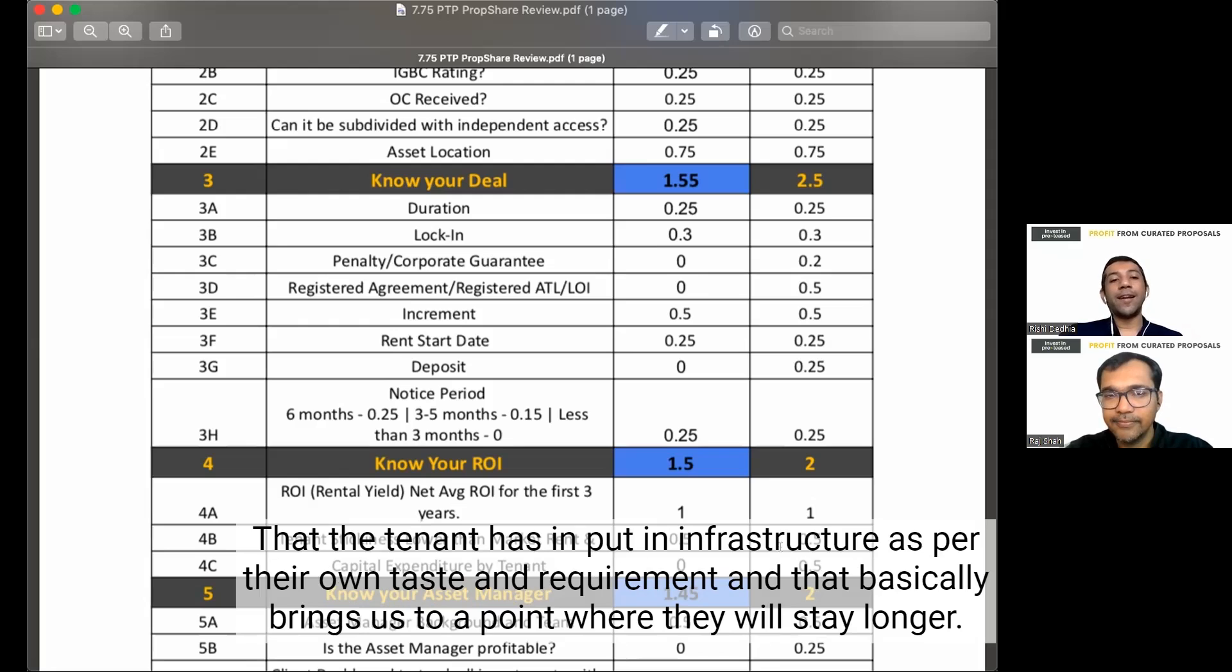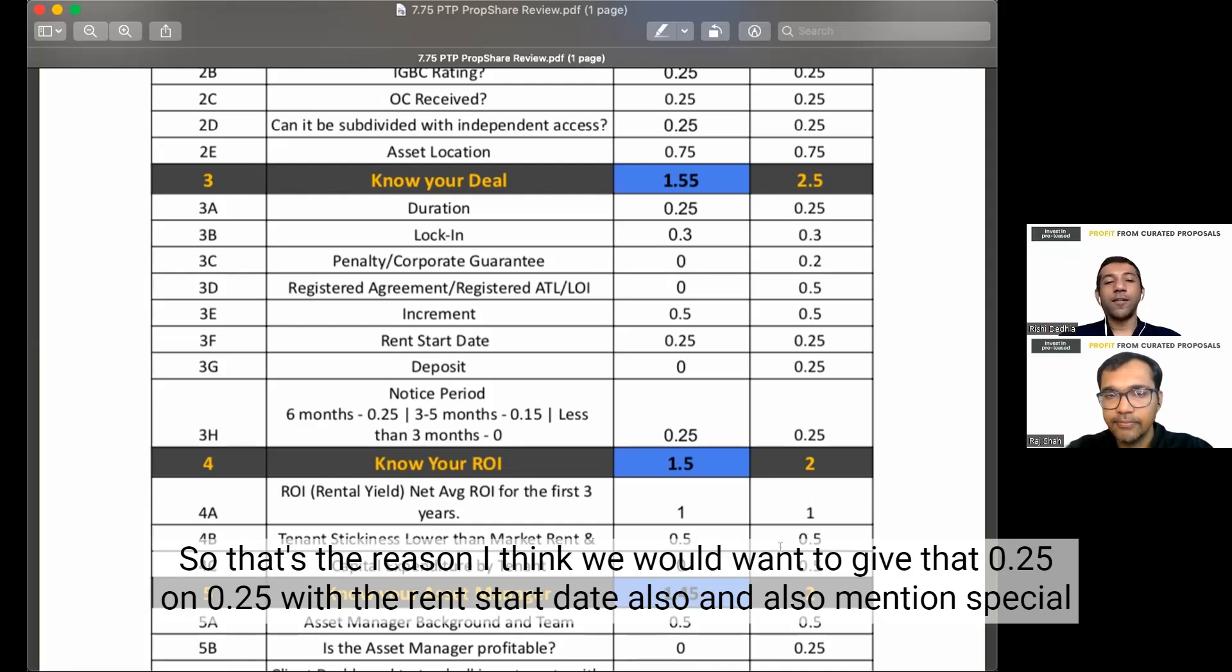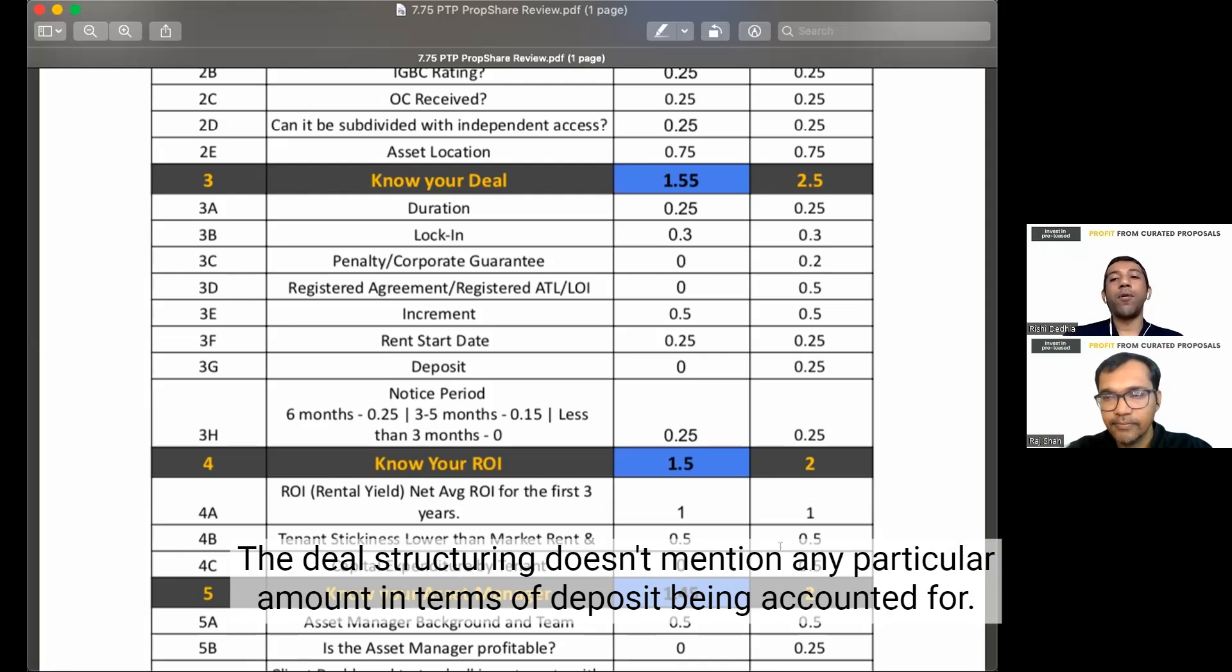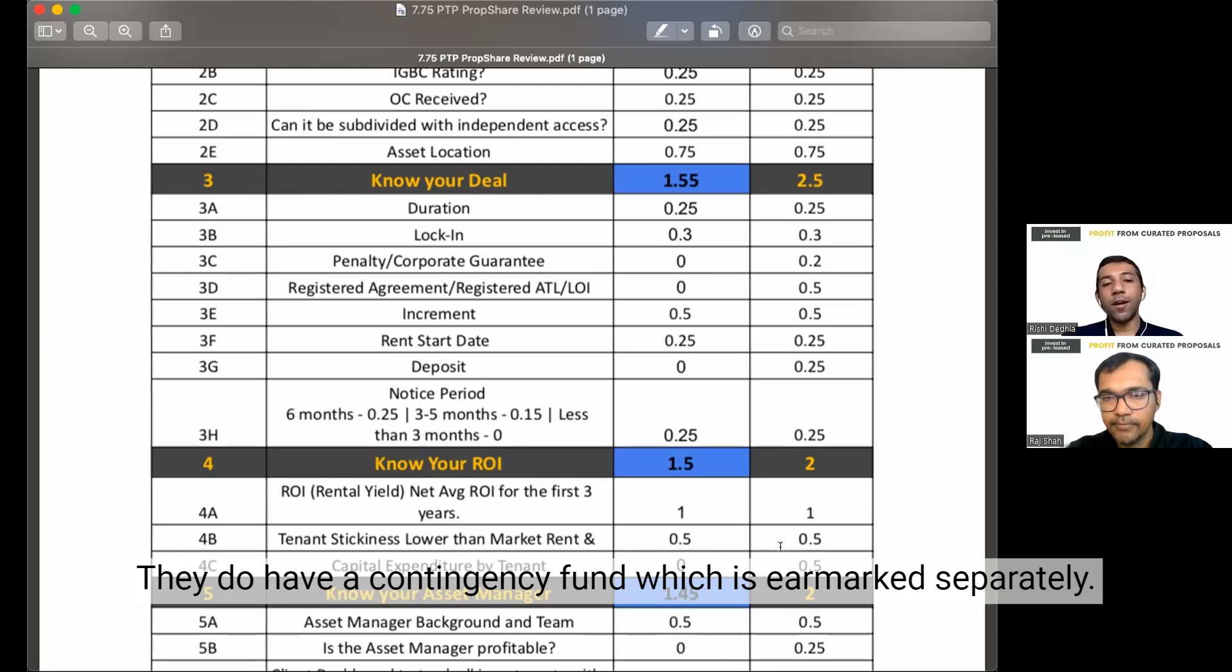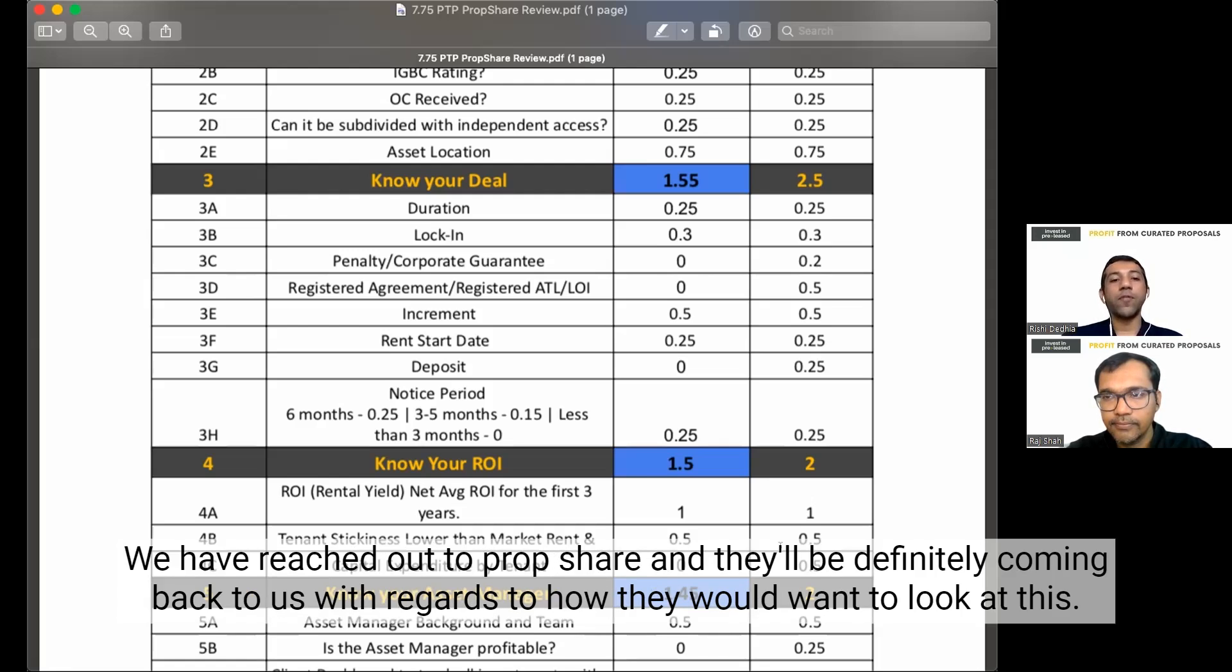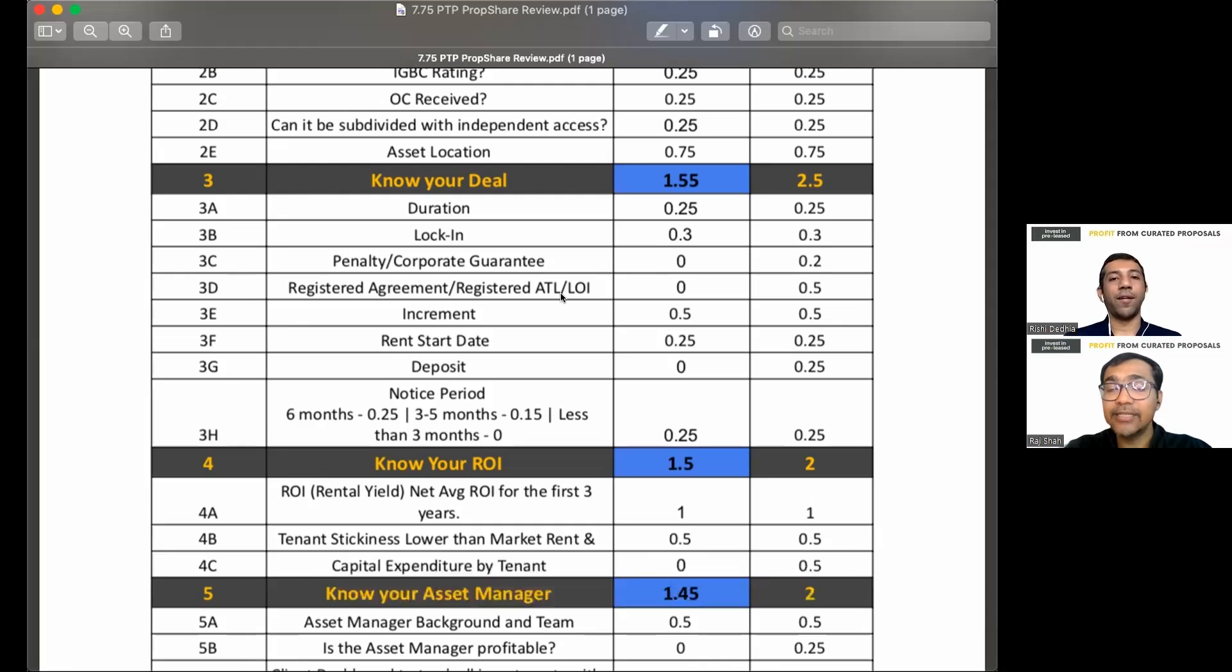Second, when a sale and leaseback, the tenant has put in infrastructure as per their own taste and requirement. And that basically brings us to a point where they will stay longer. And that's the reason if we look at the lock-in and the duration, that also reinforces the decision that it's a good mechanism to have on board. So that's the reason I think we would want to give that 0.25 on 0.25 for the rent start date also. And also a special mention for the sale and leaseback. Going to the deposit here, technically, since again, it's a sale and leaseback, the deal structuring doesn't mention any particular amount in terms of deposit being accounted for. They do have a contingency fund, which is earmarked separately. Again, since it's at the term sheet stage, we are not really adding a lot of value to this. We have reached out to PropShare and they will be definitely coming back to us with regards to how they would want to look at this. But since the deposit has 0, we will be going ahead with 0 on 0.25.